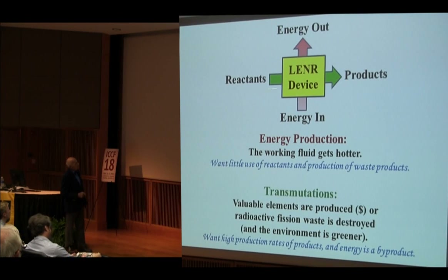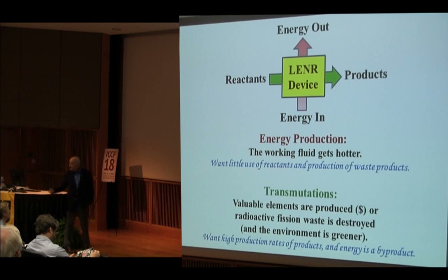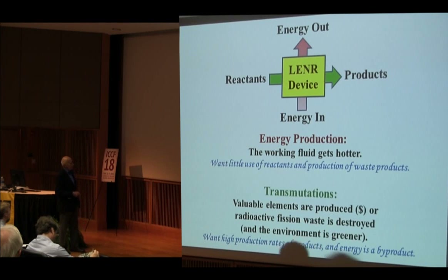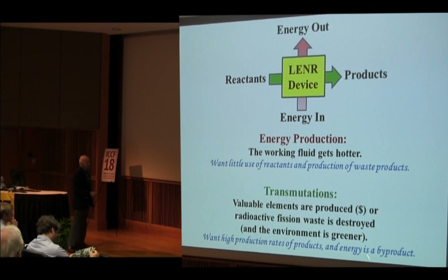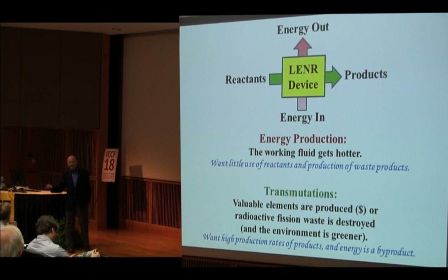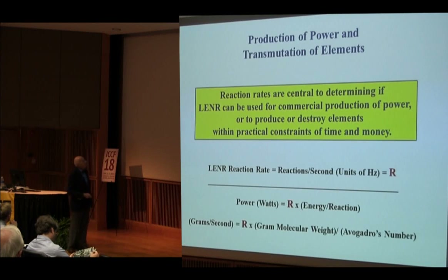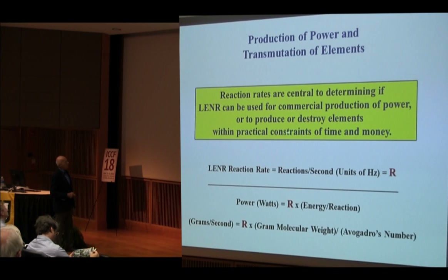We're mostly interested in the transmutation axis, but you can't avoid the energy axis. Energy production: you want to make a hotter working fluid and use as little of the reactants to produce as little waste as possible. Instead of feeding oil through, we feed a smaller amount of material and give a lot of energy out of it. As far as transmutations are concerned, we want to make or destroy elements and we want high production rates — the energy is a byproduct. Reaction rates essentially determine if LE&R can be used for either power or transmutation.